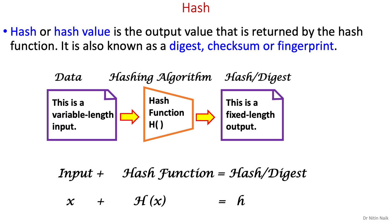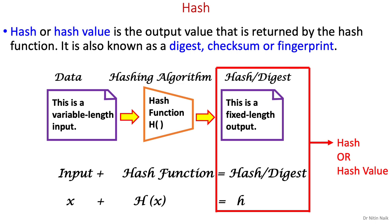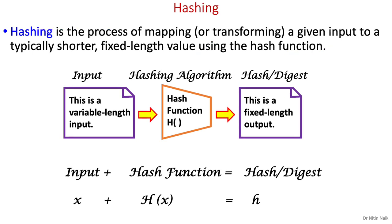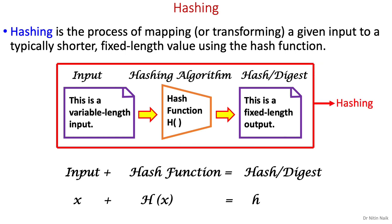Second is the hash or hash value. It is the output value that is written by the hash function. It is also known as a digest, checksum, or fingerprint. Finally, hashing is the process of mapping a given input to a typically shorter fixed-length value using the hash function. Therefore, a hash function, hash, and hashing are interrelated terms.